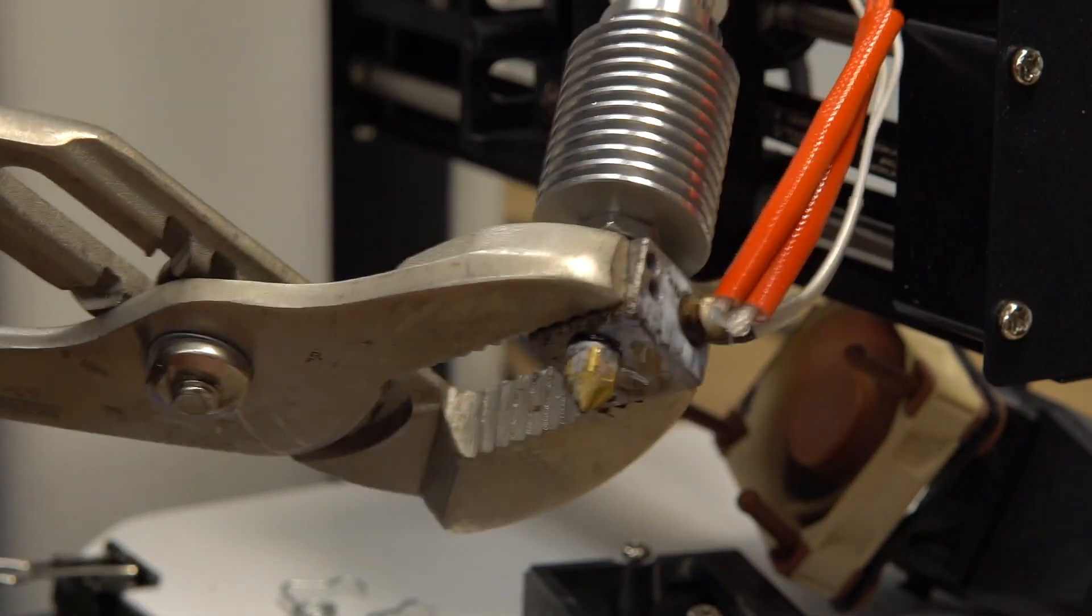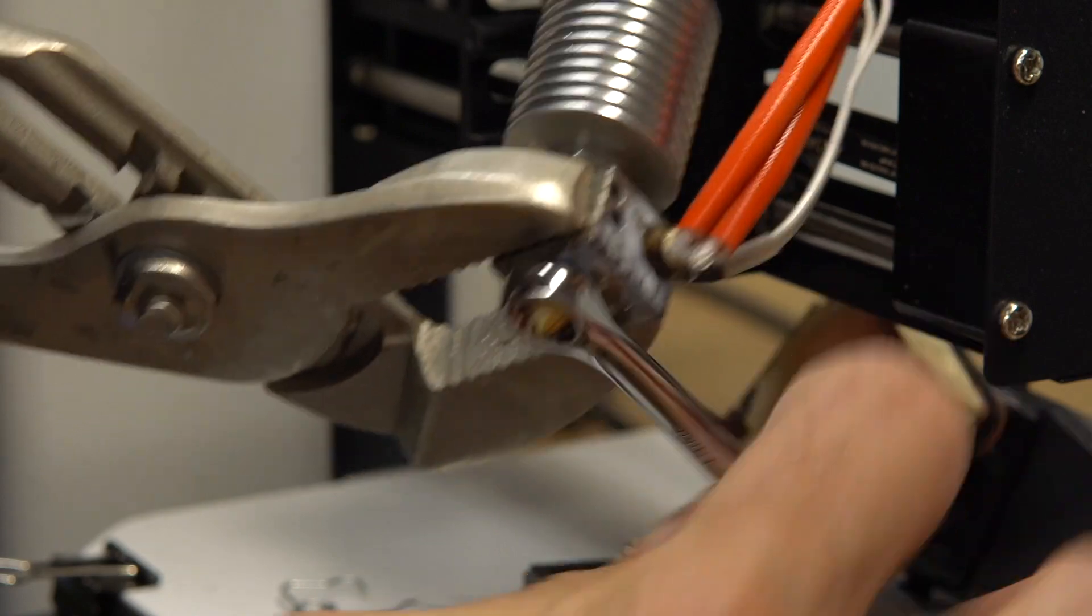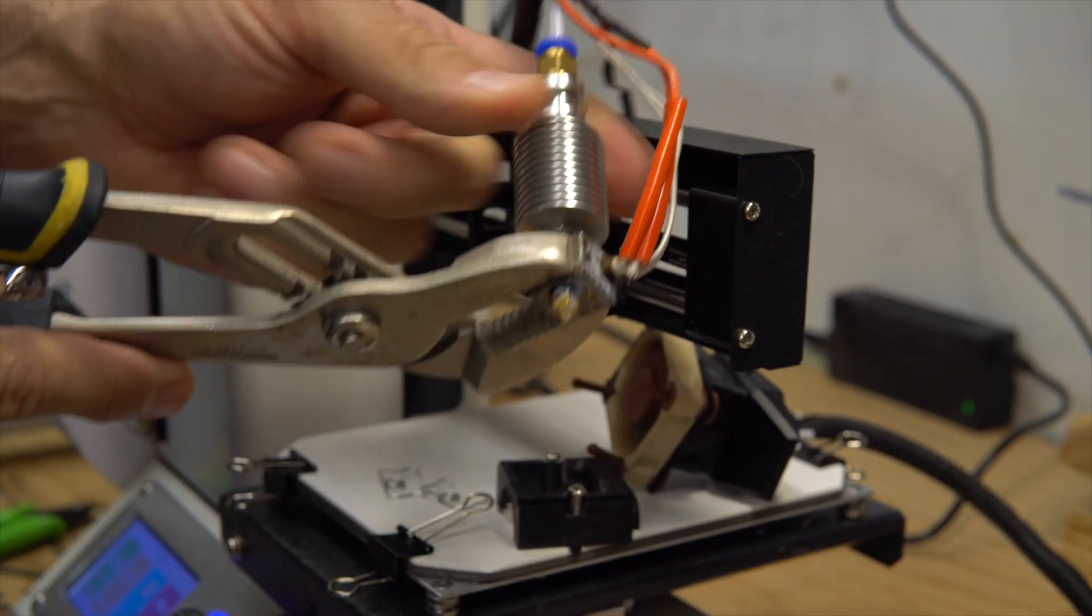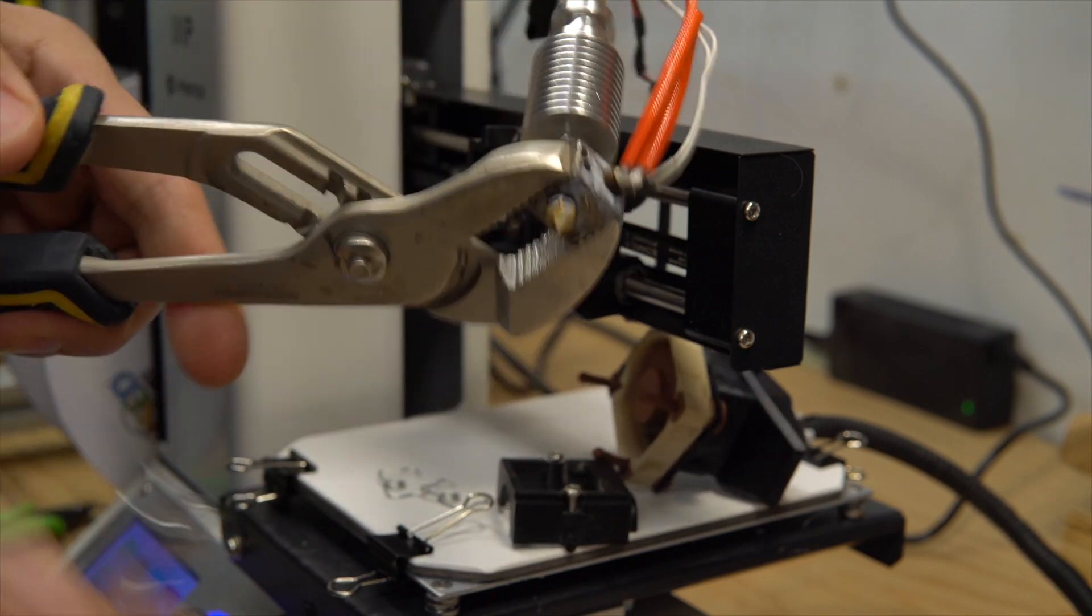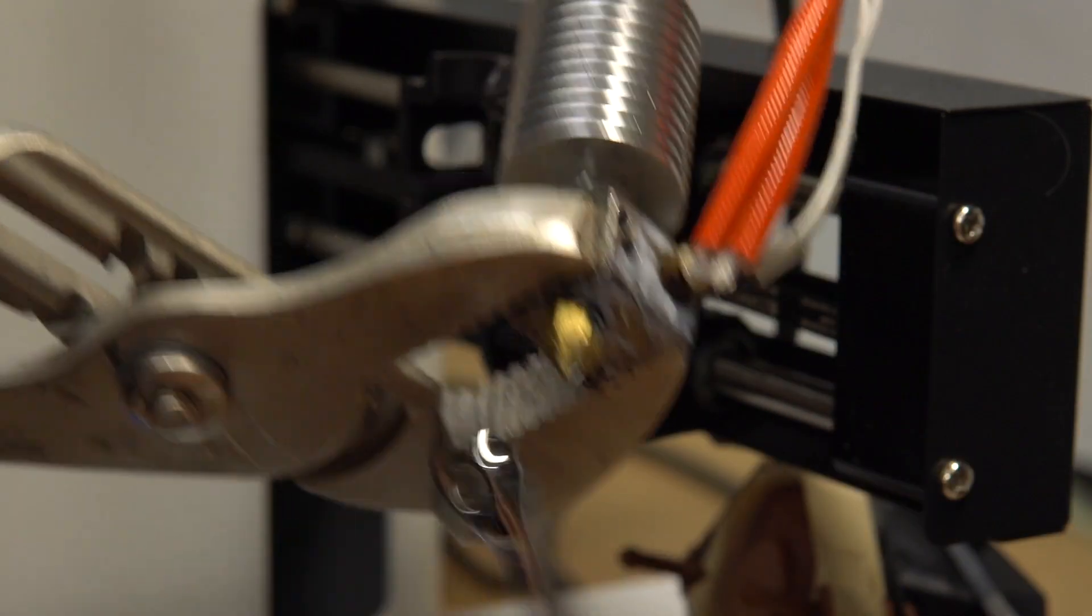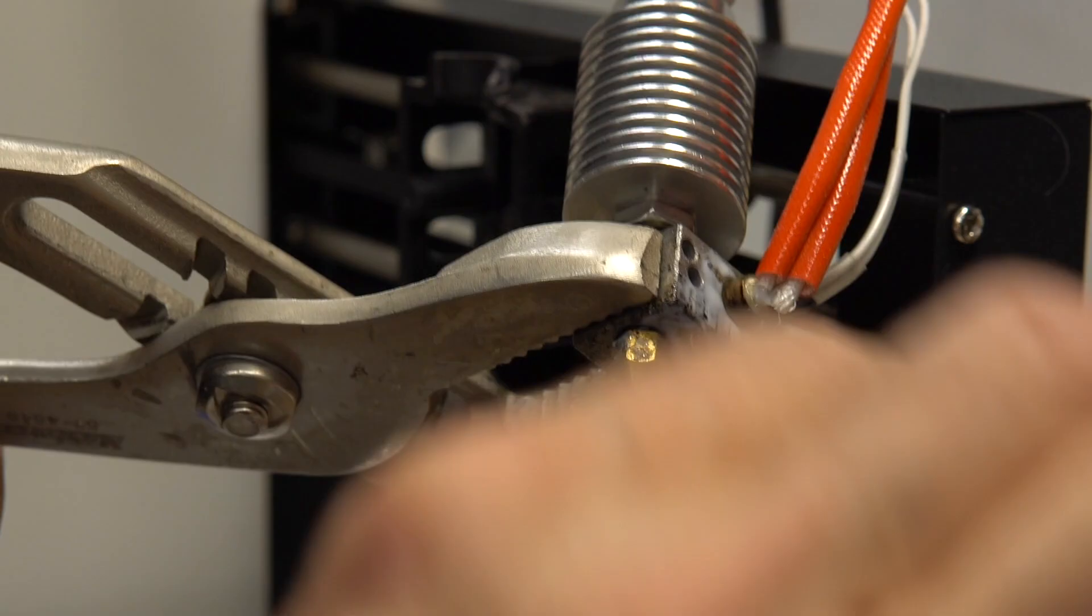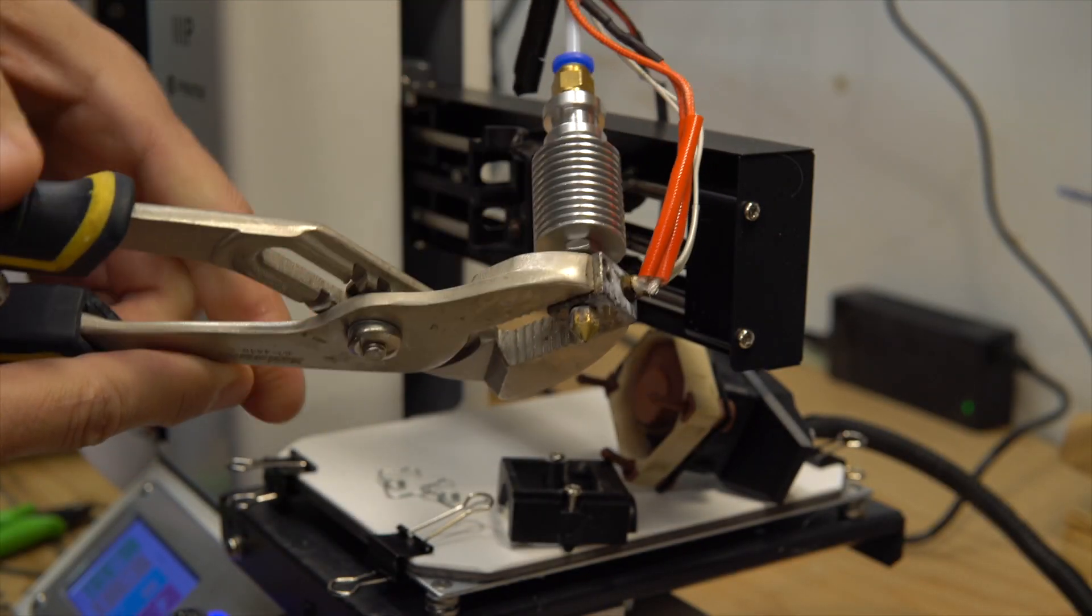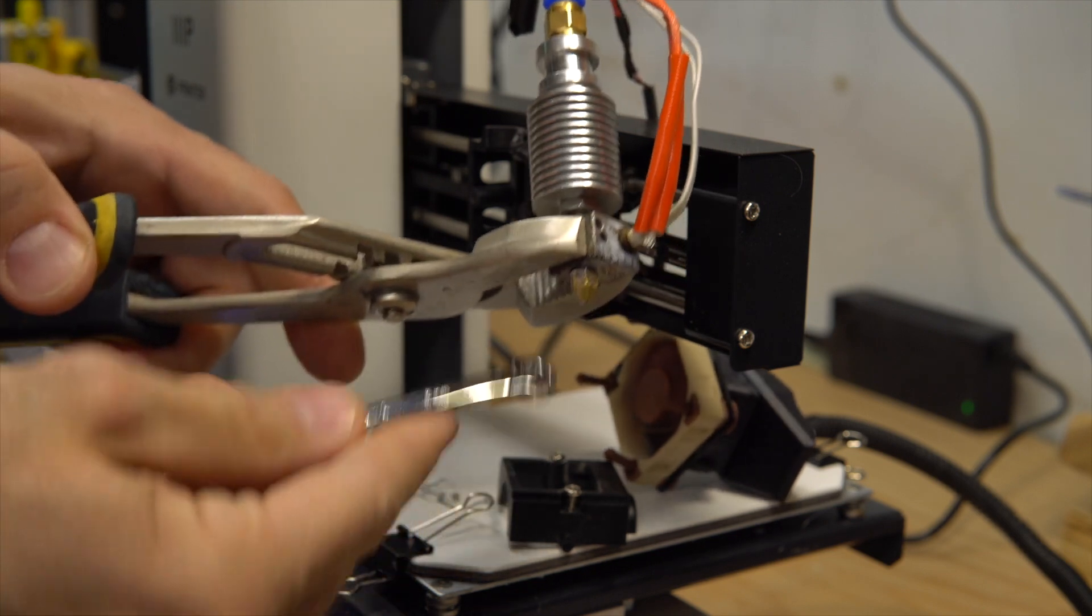So I'm moving the nozzle and then moving back the heatsink until I'm about just touching the heat block. Then I screw in back the heatsink and then final tightening of the nozzle.